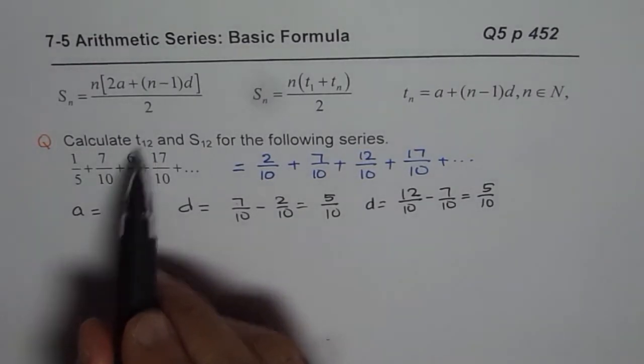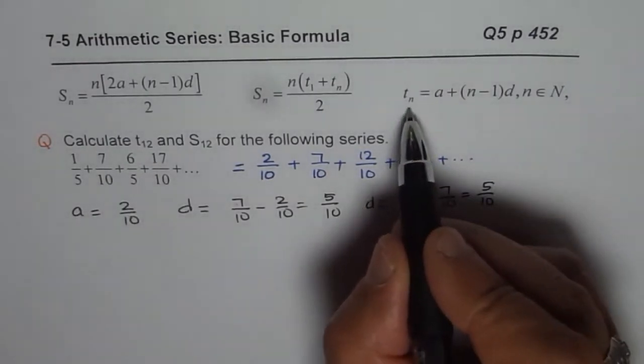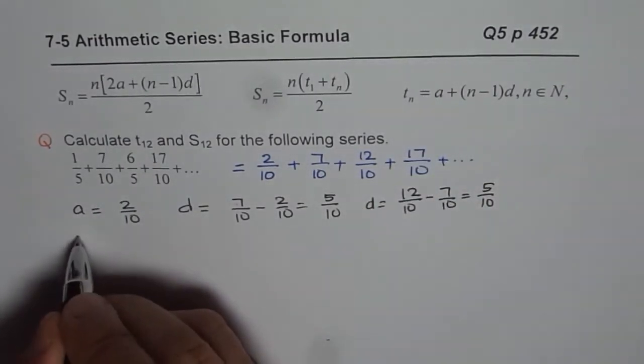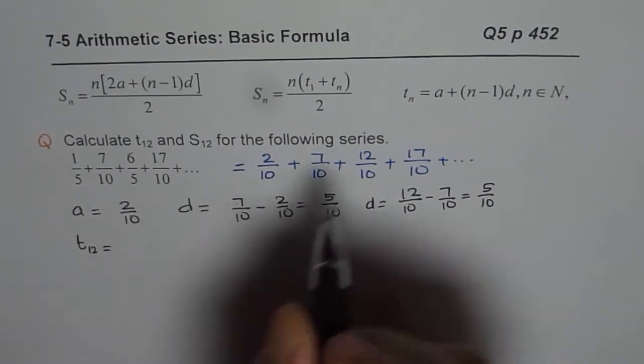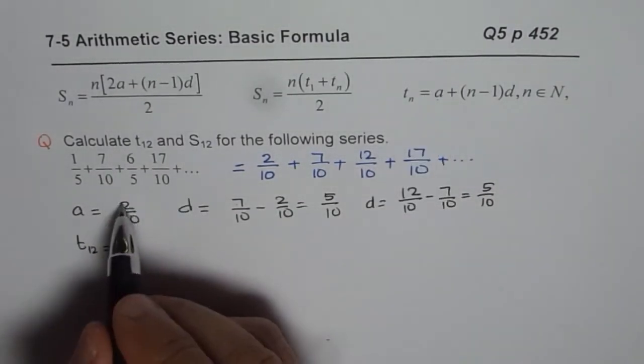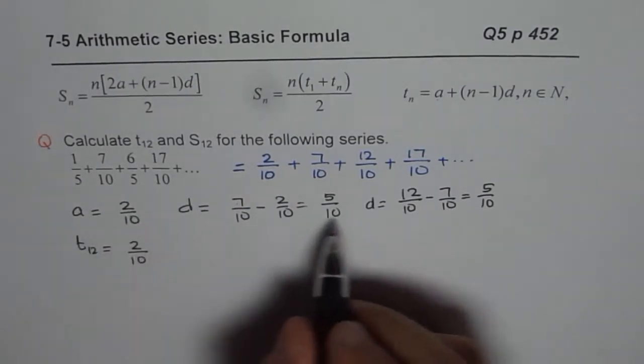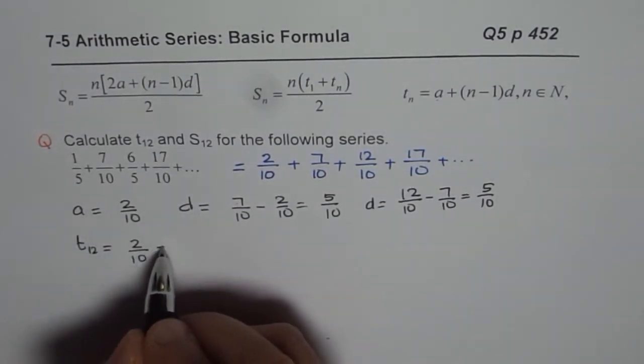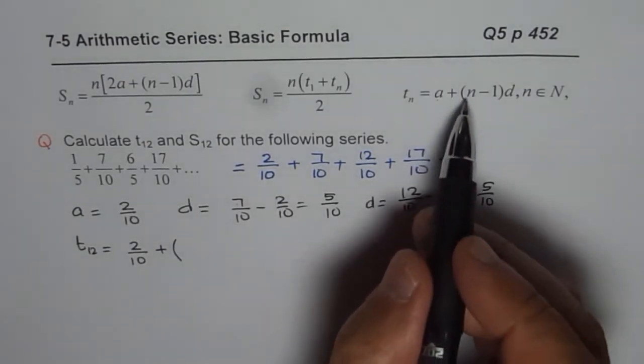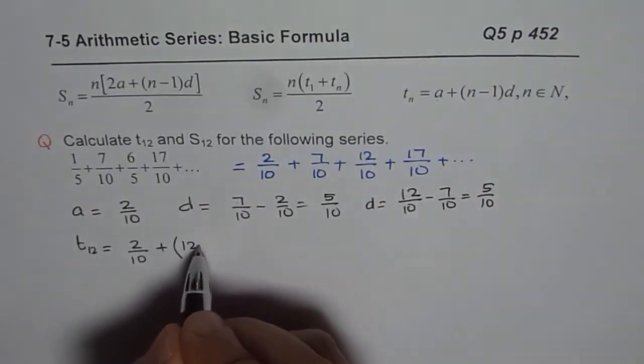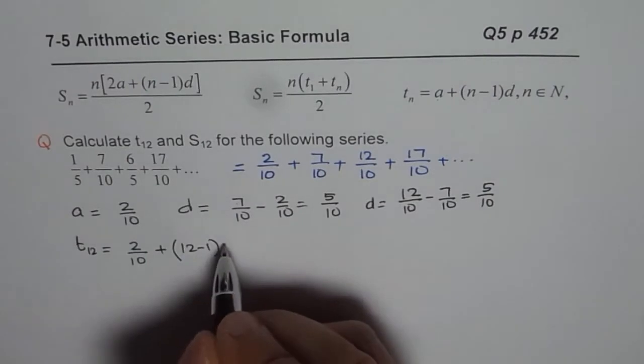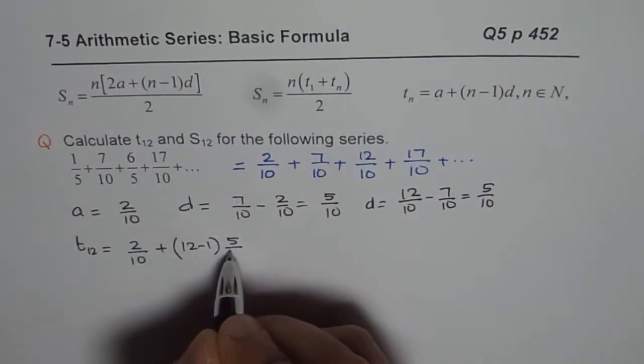So what we find is that the common difference is 5 over 10. Now we need to find the 12th term. So we can use the formula for 12th term. So T of 12 is equals to first term which is 2 over 10. I prefer to write 2 over 10. Let's use base 10 now. Then we will simplify our answer. N is 12 minus 1 and D is 5 over 10.